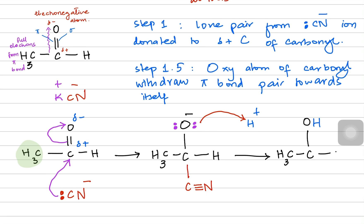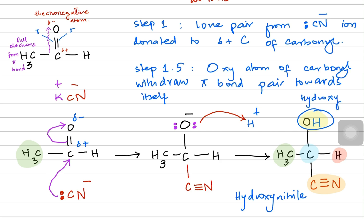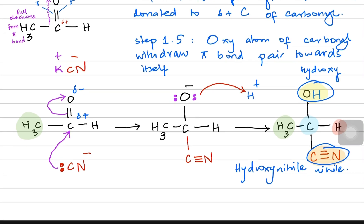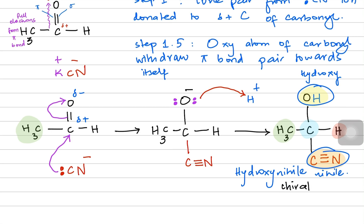What you see is a central carbon with an OH group on top, a methyl group on the left, a hydrogen on one side, and a cyanide at the bottom. We call this product a hydroxynitrile — the 'hydroxy' part is the OH group and the 'nitrile' part is the CN. You can see this central carbon is a chiral carbon, so at the end of the nucleophilic addition reaction you get a chiral carbon that can exhibit optical isomerism.